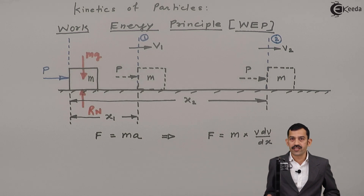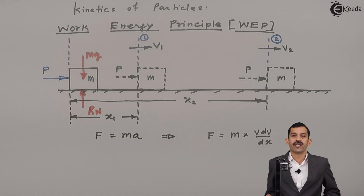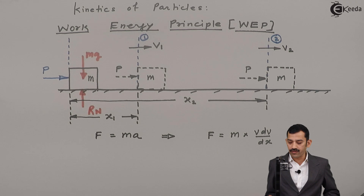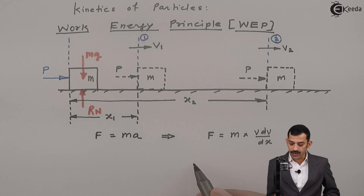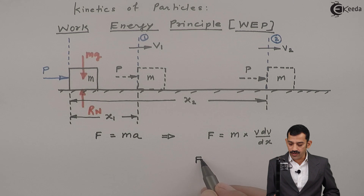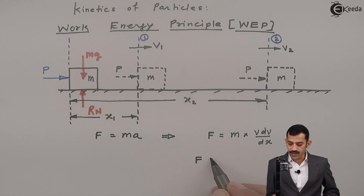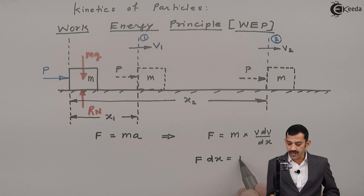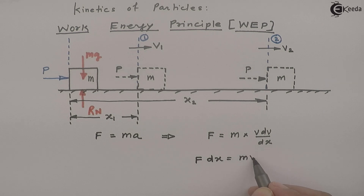Now, as per the equation F = ma, if we write acceleration in terms of velocity and displacement as v·dv/dx — since acceleration is dv/dt, multiplying and dividing throughout by dx gives v·dv/dx — this equation becomes F·dx = m·v·dv.